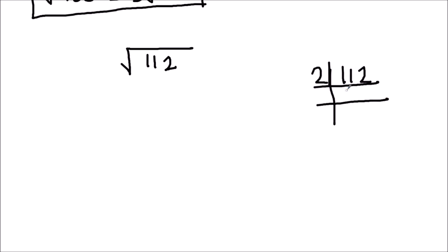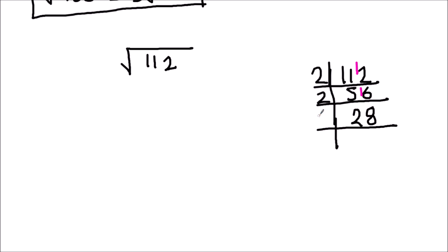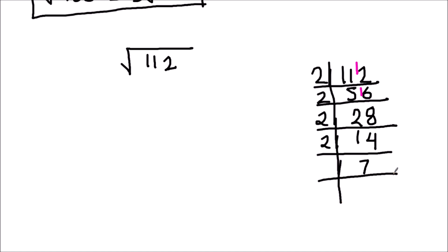Let's divide it by 2. 2 times 5 is 10, with 1 as remainder, making 12. 2 times 6 is 12. Again we can divide 56 by 2. 2 times 2 is 4, with 1 as remainder. 2 times 8 is 16. Again we can divide it by 2. 2 times 1 is 2, 2 times 4 is 8. 2 times 7 is 14, and 7 is a prime number — it is only divisible by 7. 7 times 1 is 7.